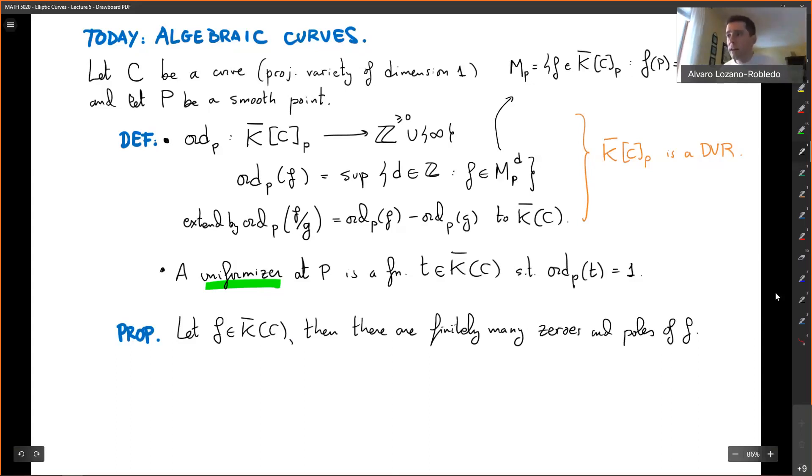So if you have a function in the function field, then there are finitely many zeros and poles of f. By the way, we say that a zero is if the order at P of f is positive, and a pole if the order at P of f is negative. So there are only finitely many such things. And if f has no poles, then f is actually a constant function. Remember that here we are still assuming that C is a smooth curve.